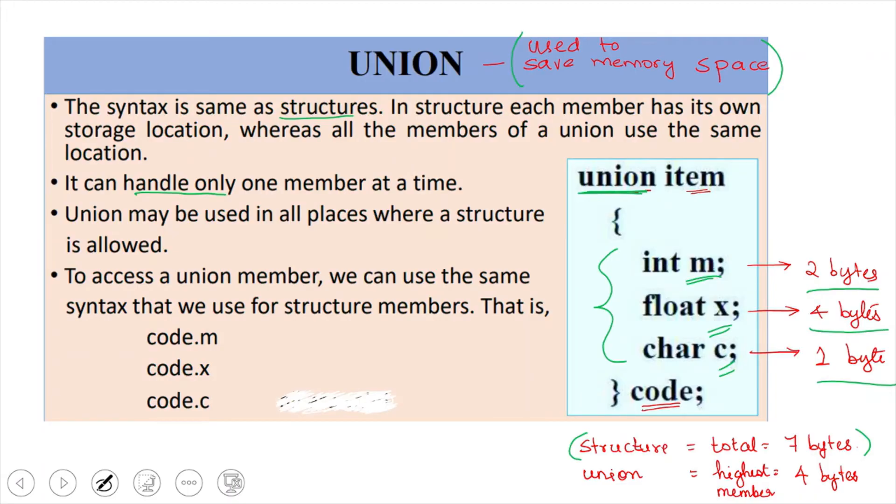That is two plus four plus one. But for a union, it will reserve only the space of the highest member. So, here the highest member is X because it requires four bytes. So, union will have only four memory bytes allocated. So, instead of seven bytes, we are going to use four bytes over here.